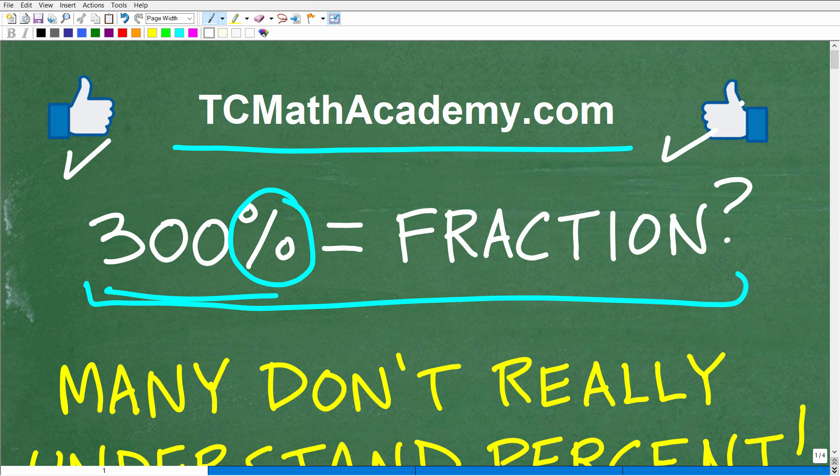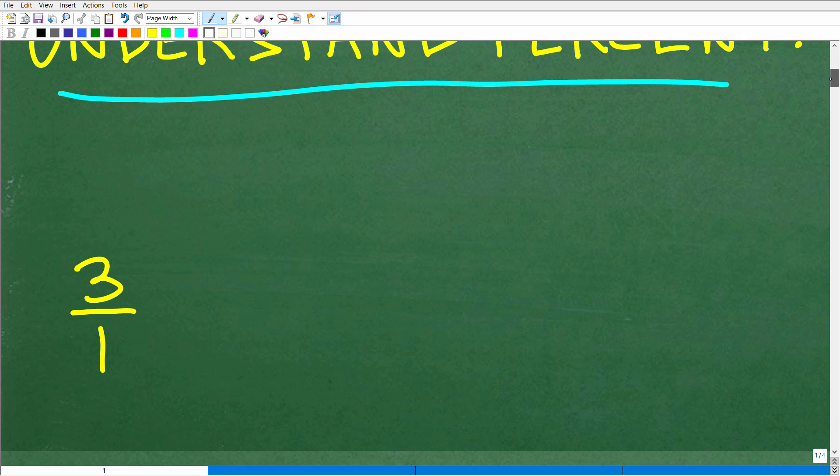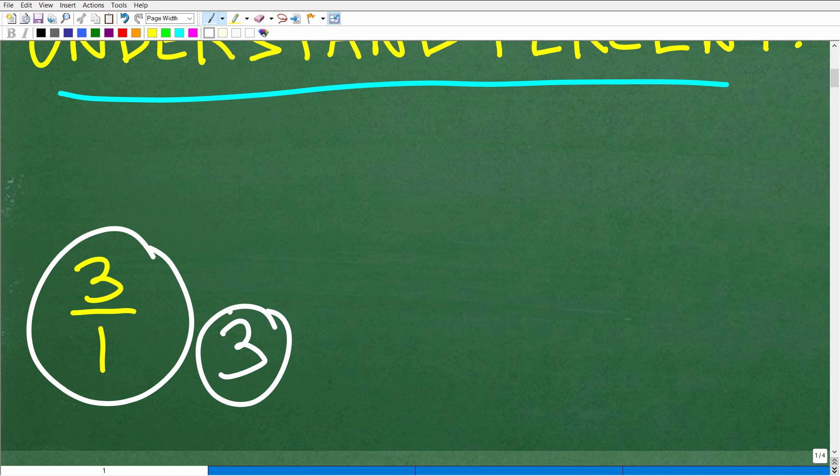So here again is our question. It's a very specific question: I want you to express 300% as a fraction. Let's take a look at the right answer. The correct answer is three over one. Now this is a fraction, there is a numerator and denominator. But if you put three as your answer, I would accept both of these answers.